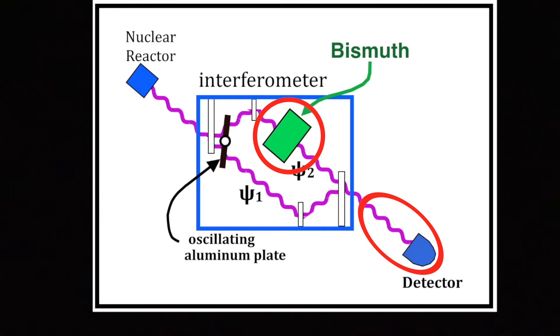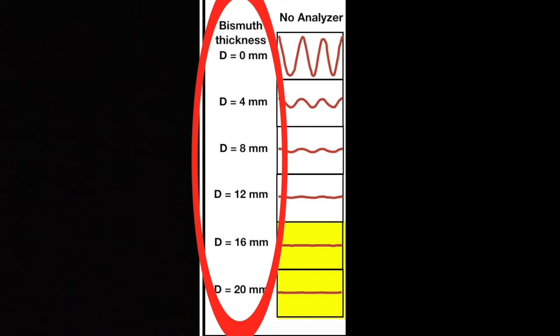Apparently, the upper wave packet had been so delayed by the bismuth that it missed the boat, and the lower wave packet had already left the interferometer before the upper wave packet got there. That is shown in this graph, in which you can see d is the thickness of the bismuth from 0 millimeters at the top of the graph down to 20 millimeters at the bottom, and as the amount of bismuth increases, the height of the sinusoidal curve decreases.